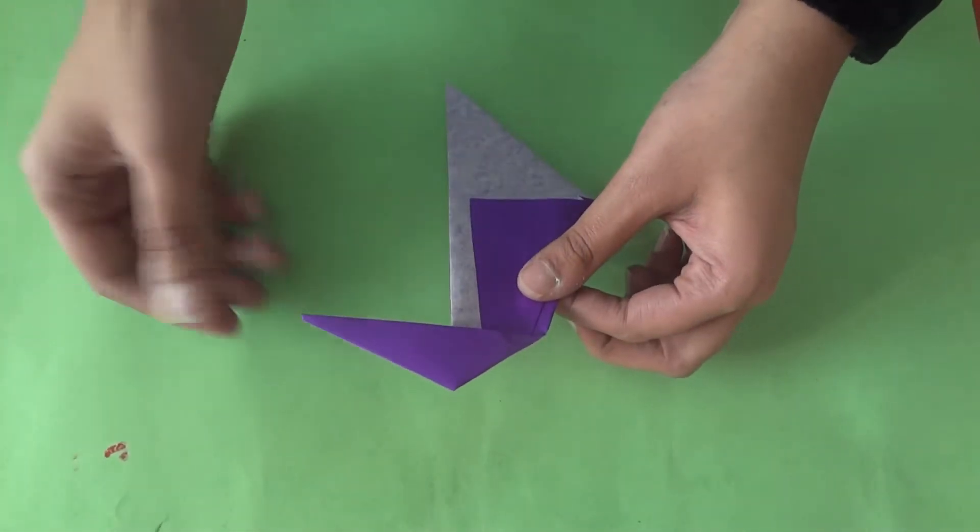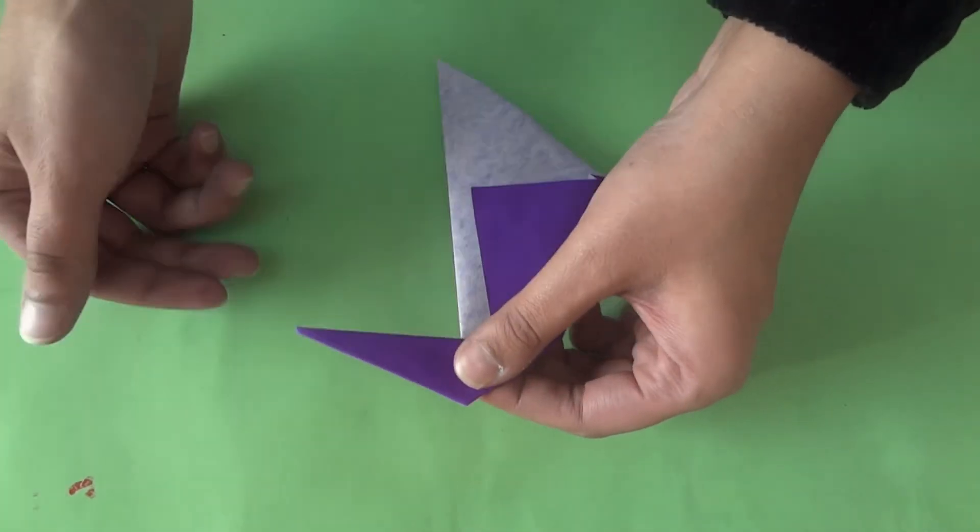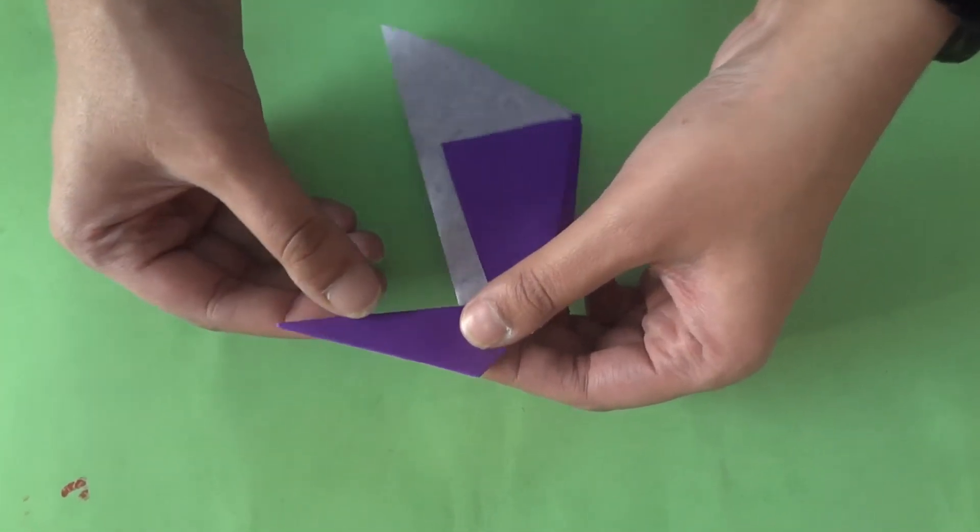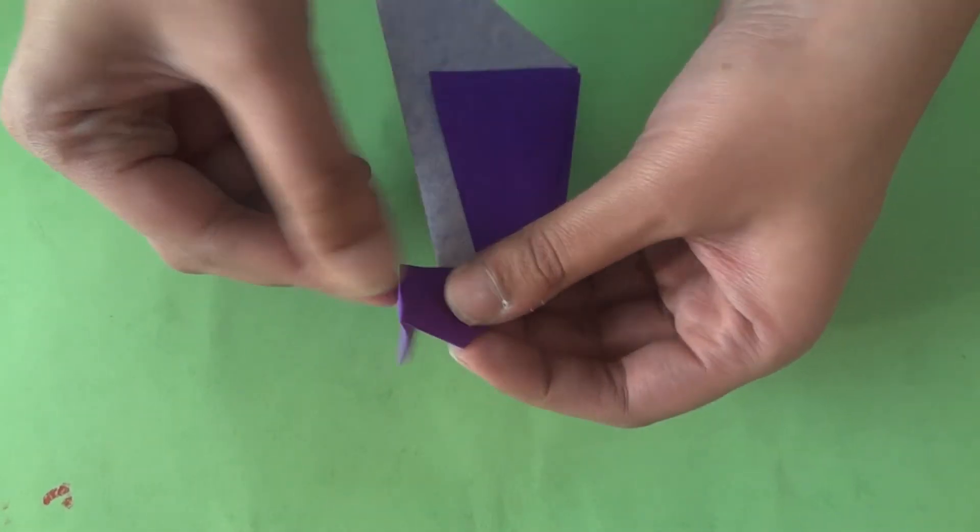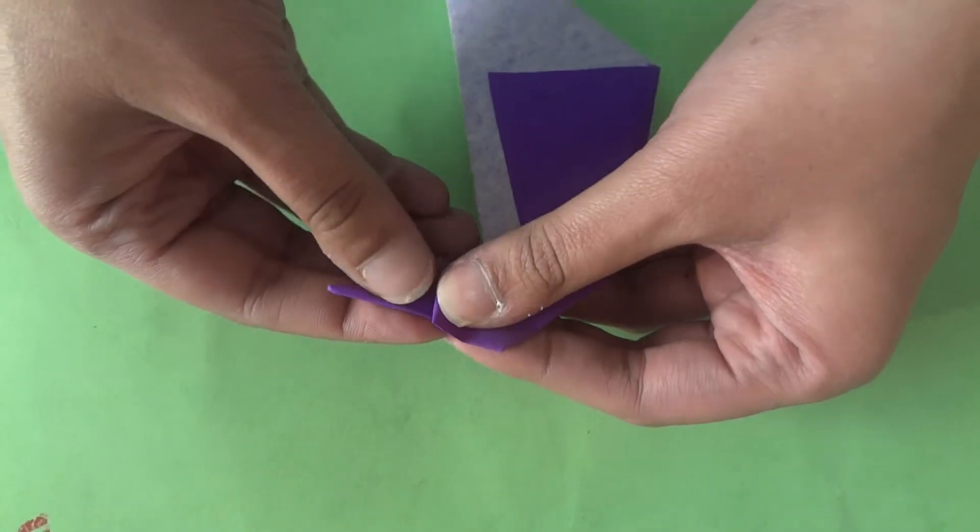For the beak of the penguin, we will make a staircase fold. To make a staircase fold, you take it backwards and bring it forward again. In this way.